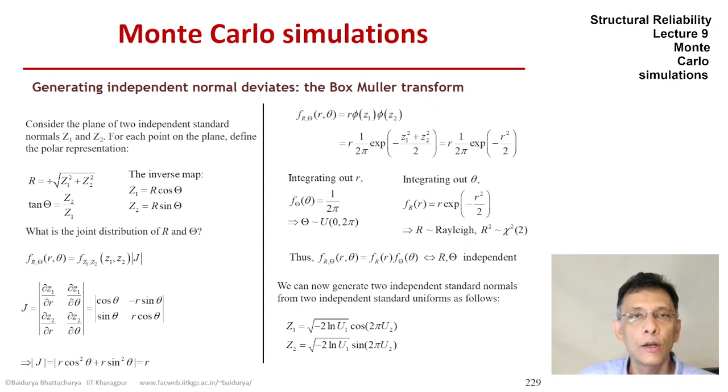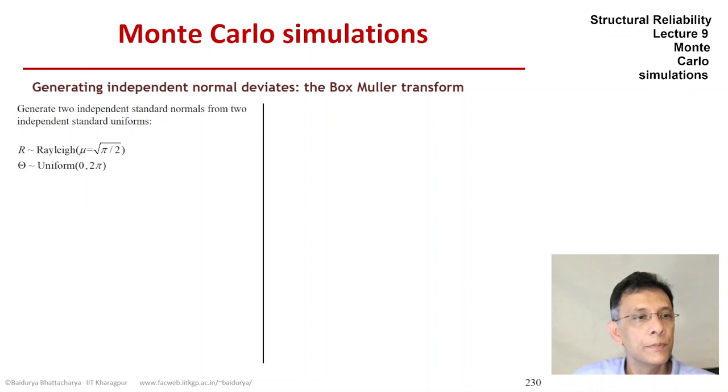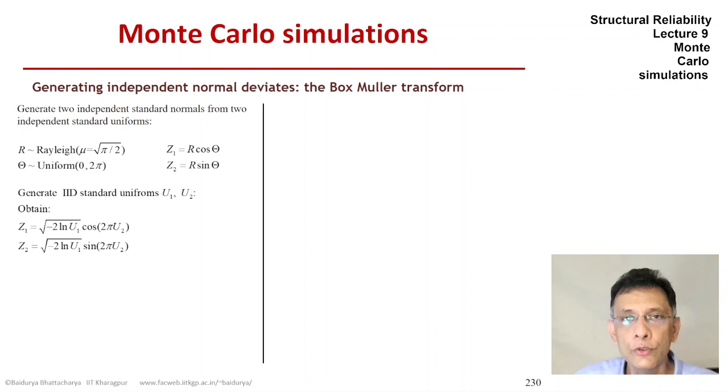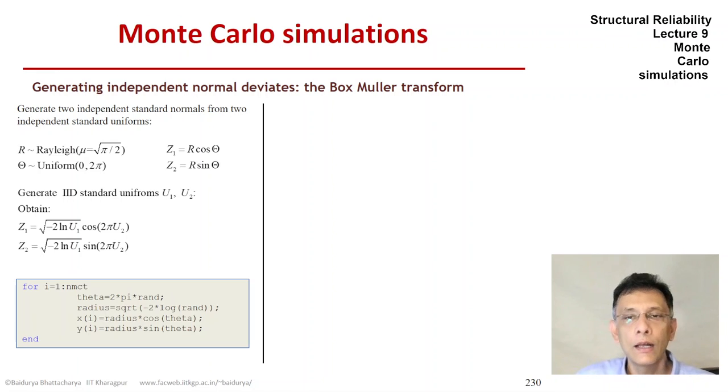So here we have Z1 and Z2 in terms of u1 and u2. The first u, the u1 is used to generate the angle. Let's look at just an implementation with MATLAB code. So r, as I said, is Rayleigh with the mean of root of pi by two and theta is uniform between zero and two pi. And we are going to use the polar representation for Z1 and Z2. So this would be the code, the little snippet of MATLAB code. We generate theta uniformly between zero and two pi. So the rand multiplied by two pi would give me that.